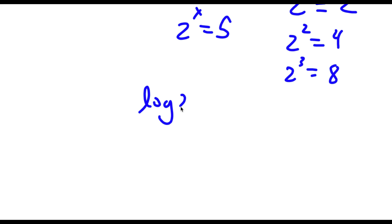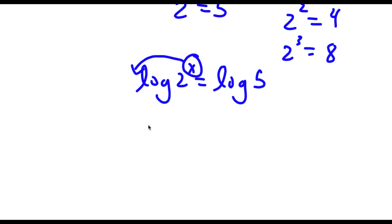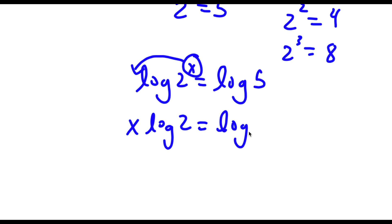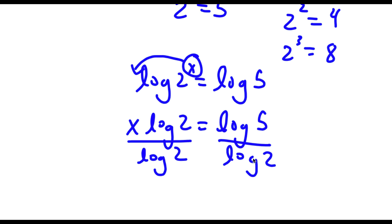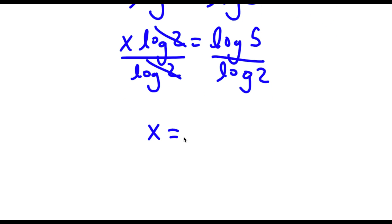So I had log 2 to the power of x is equal to log 5. Now, by using this property, I can move x to the front. So now I have x times log 2 is equal to log 5. Now, if I divide both sides by log 2, these two cancel out and I'm left with x is equal to log 5 over log 2.